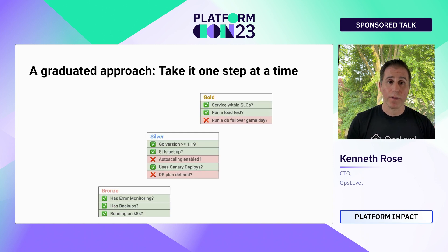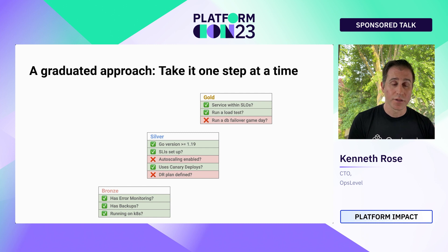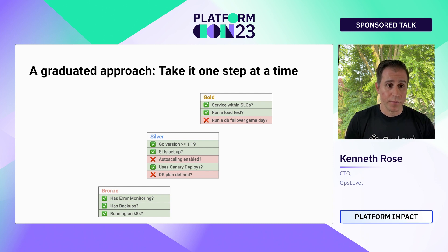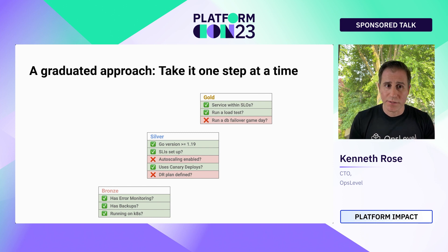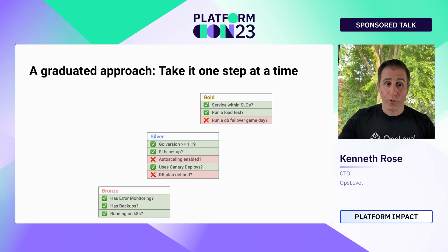As an alternative, you can take a graduated approach, which involves partitioning your production readiness list into different levels — so that each service gets a single score at a particular level. In this example, I have a production readiness list with three levels: bronze, silver, and golden. If I was a service owner, I would see that my service is currently in bronze — it's passing all the bronze checks, but not all the silver checks. This provides two big benefits. First, it becomes much easier to compare different services: services are either bronze, silver, or gold, rather than 66% or 72%. Second, this is actually a prioritization function — I know I should start working on the silver checks, like enabling auto-scaling or defining a disaster recovery plan, before I try to run a DB failover game day, which is in gold. I have to get to silver before I get to gold.